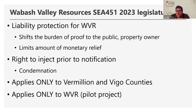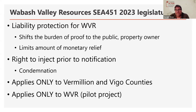Senate Enrolled Act 451 gives broad liability protection for Wabash Valley Resources, shifting the burden of proof for any damage or harm to the property owner, and limits the amount of monetary relief owed to those that may be harmed. It also gave Wabash Valley Resources the right to inject prior to notifying customers. The statute reads that they inform property owners upon the expected migration of the CO2, meaning even if they believe CO2 may reach your property underneath your home, underneath your farm, underneath your school — Wabash Valley Resources can go ahead and inject without notifying you and only has to notify you upon the expected migration of that CO2.